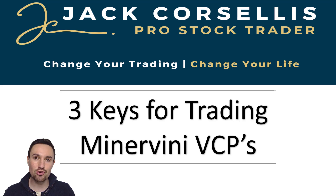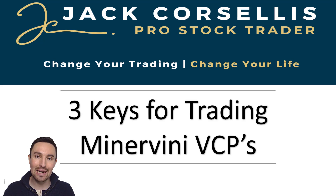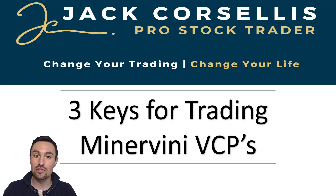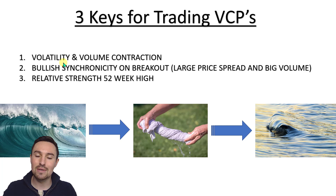I'm going to teach you three keys when you're trading Minervini VCPs. There's then going to be a quiz - I'm going to show you 10 charts, winners and losers, and I want you to play along and see if you can get a hundred percent. So what are the three keys? The first thing is volatility and volume must be contracting from left to right - diminishing and falling as it moves from left to right.